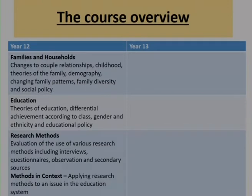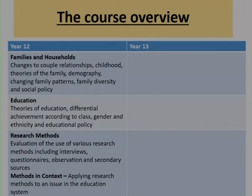Let's have a quick look at the course overview and what you'll be studying throughout the two years. In year 12 there are three main topics. The first is families and households — here we look at changes to couple relationships, the nature of childhood, different sociological theories of the family such as functionalism, Marxism and feminism, demography (death rates, birth rates and how they've changed over time), how the family unit has changed, and the impact of government policy on family.